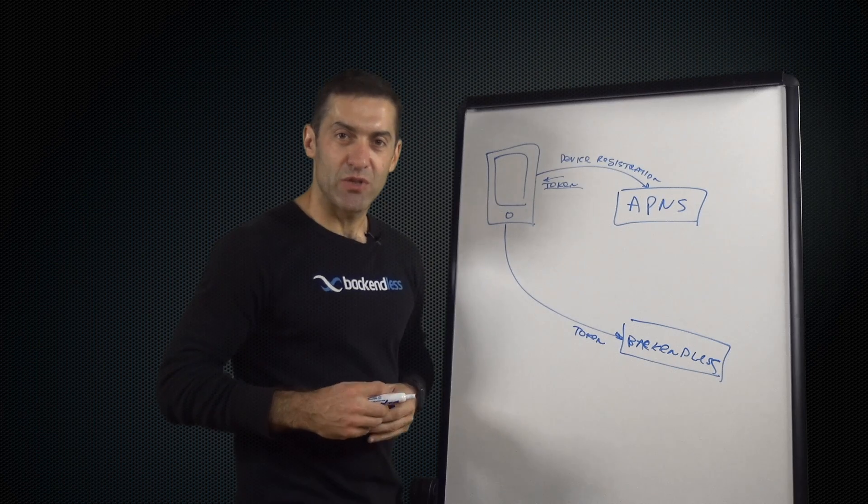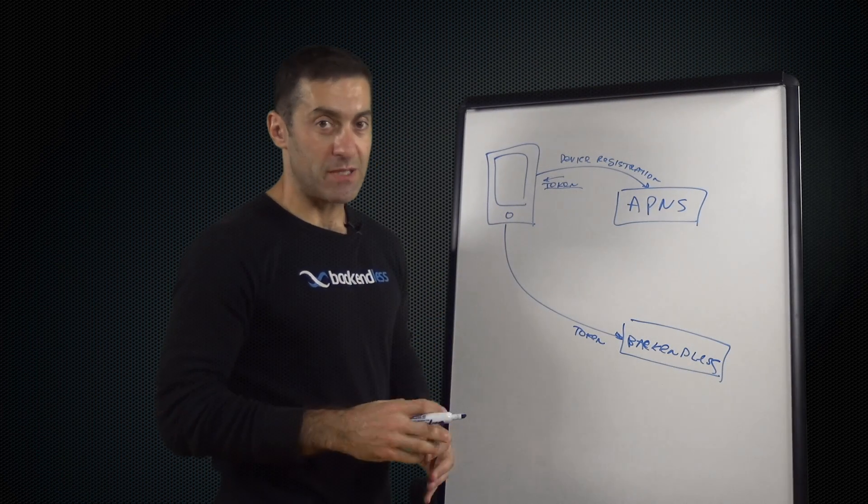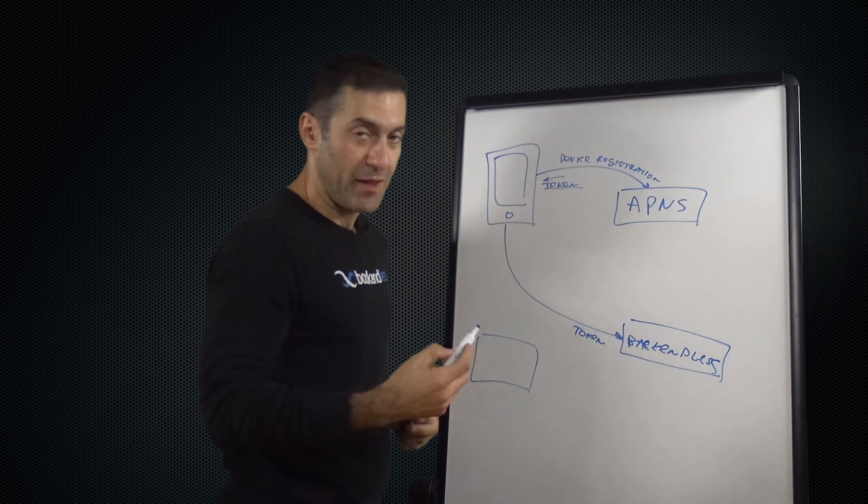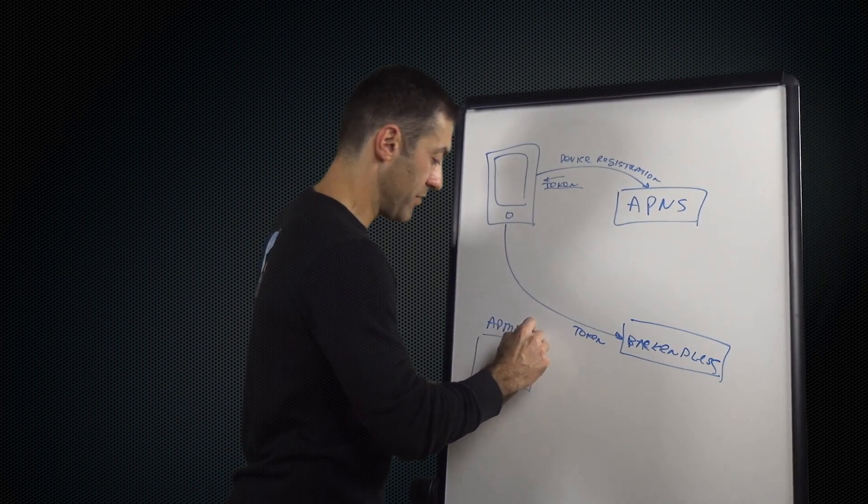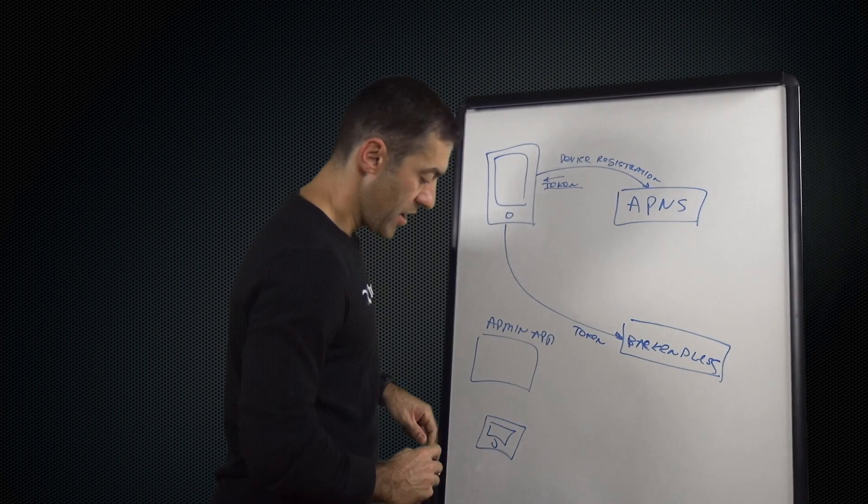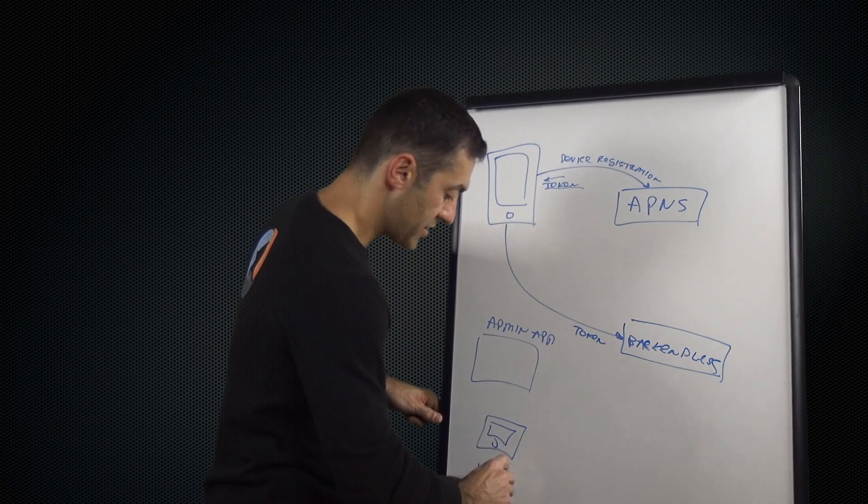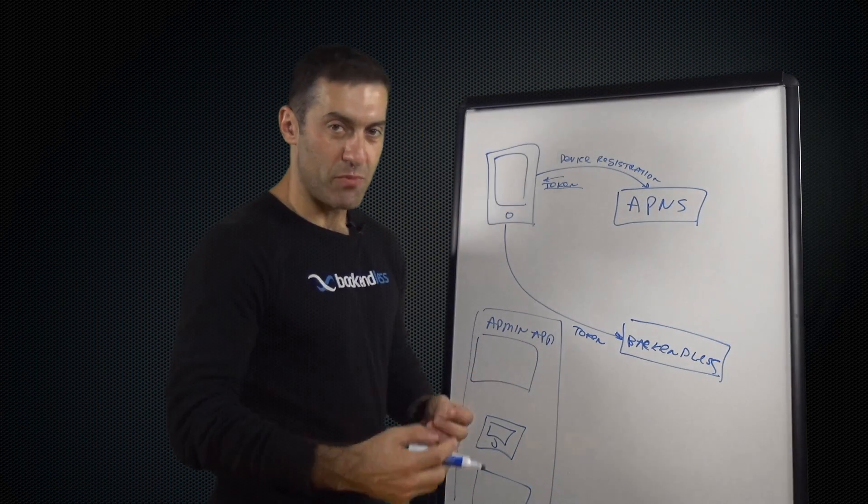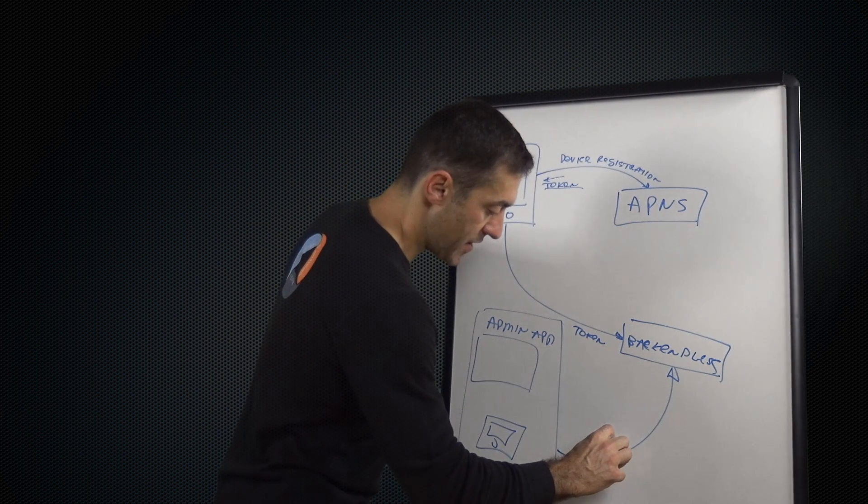Now, let's say you need to send the push notification to that specific device. That request may come from anywhere. It may be another admin app, it could be another device, it could be a Backendless management console. So let's just say that there is a group of apps that can publish push notifications.